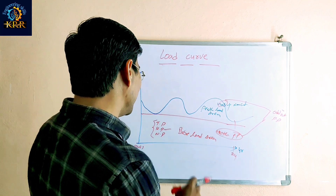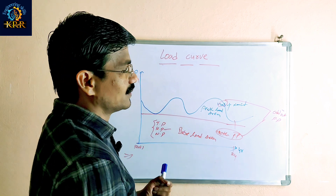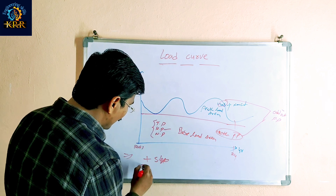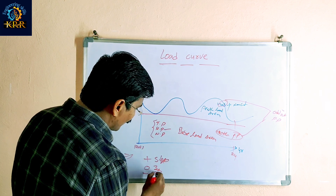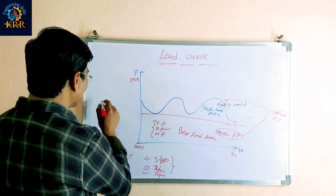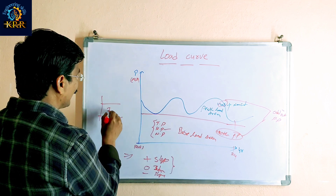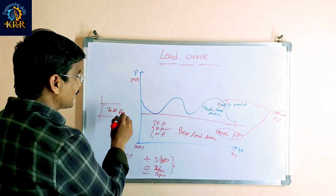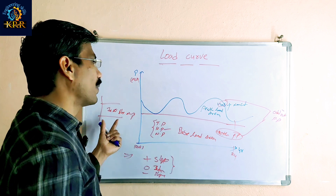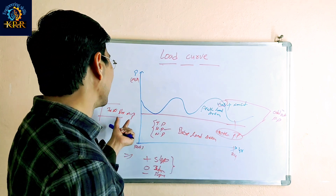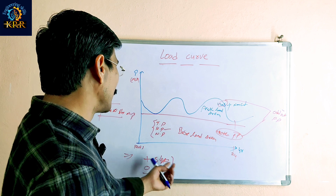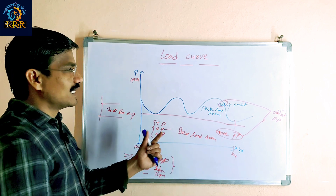In the graphical load curve, there are three types of slopes: positive slope, zero slope, and negative slope. For example, the zero slope corresponds to the nuclear power plant. Nuclear power plant comes under the zero slope. So three types of slopes are available — positive slope, zero slope, and negative slope — based on the load.